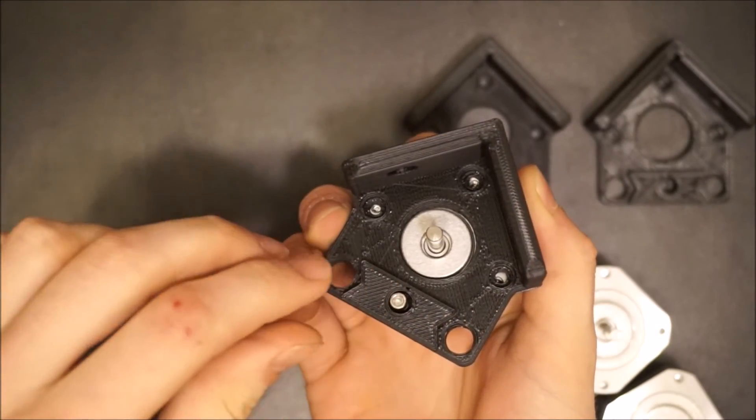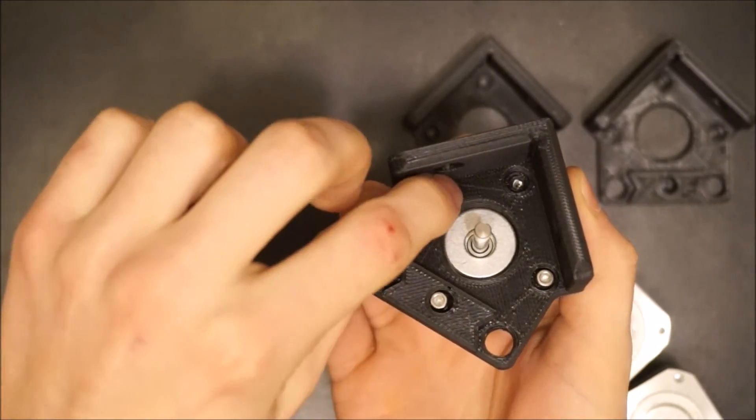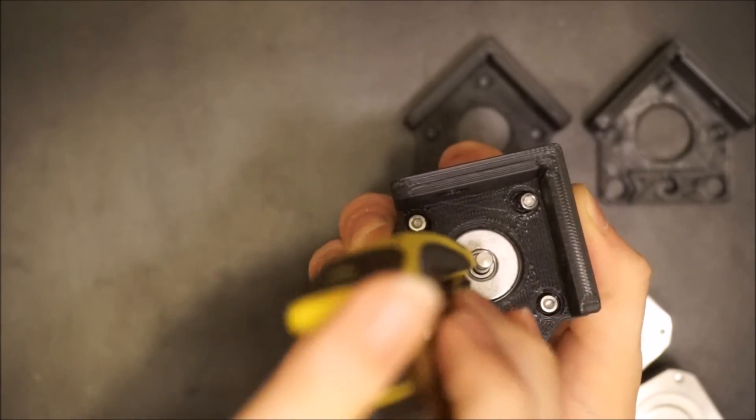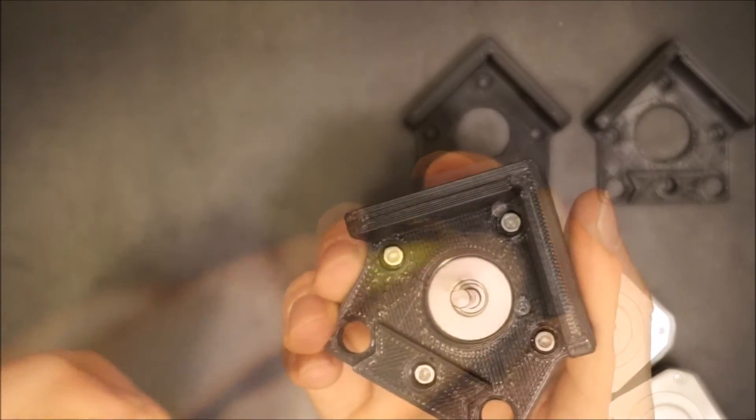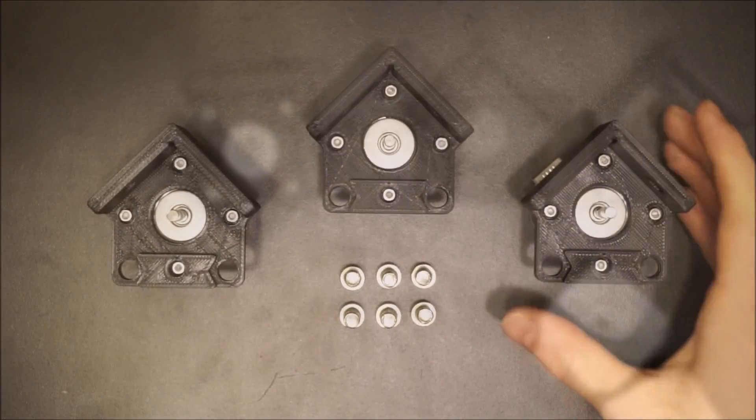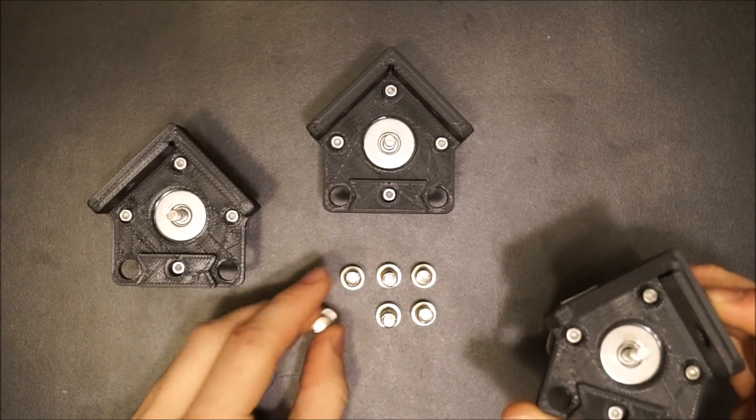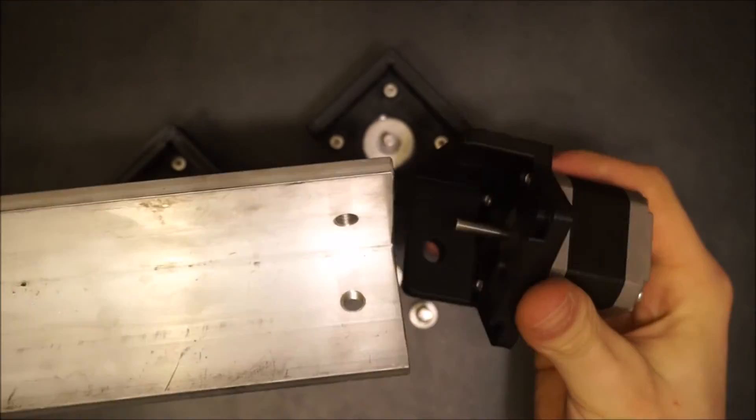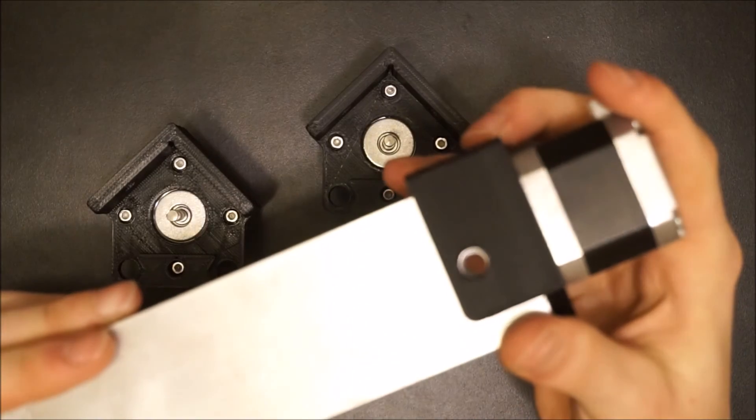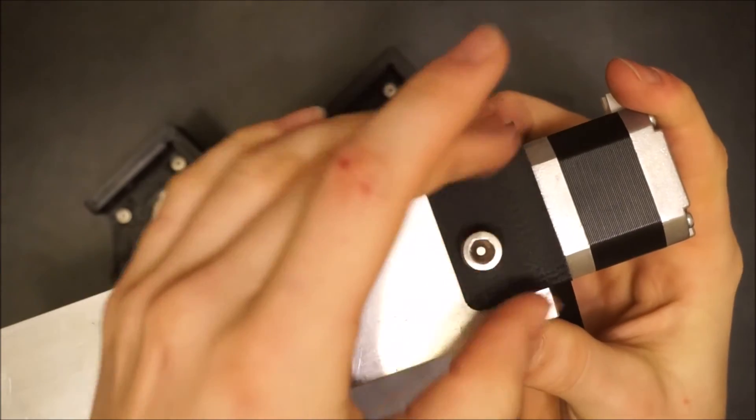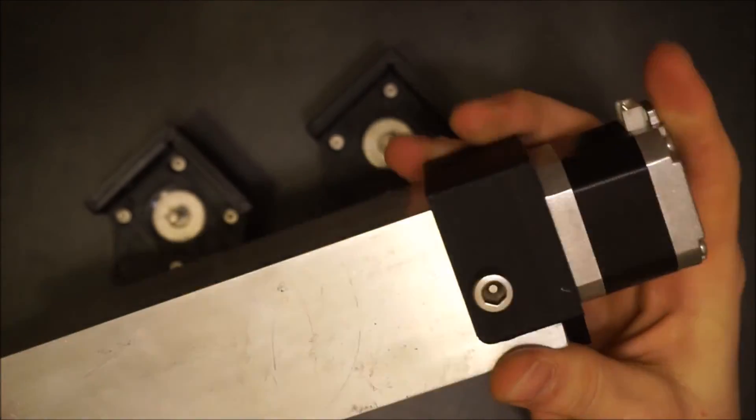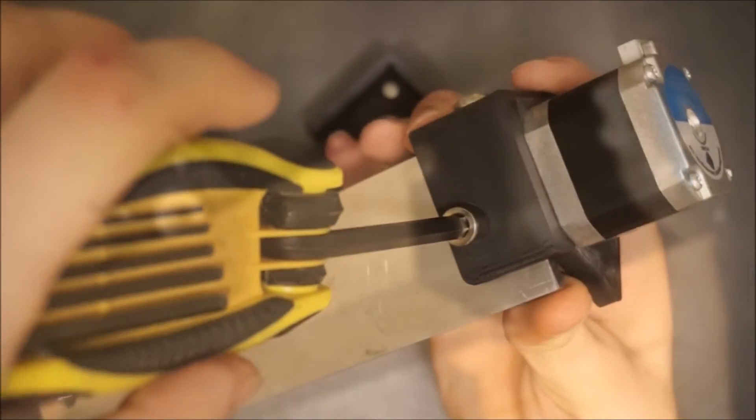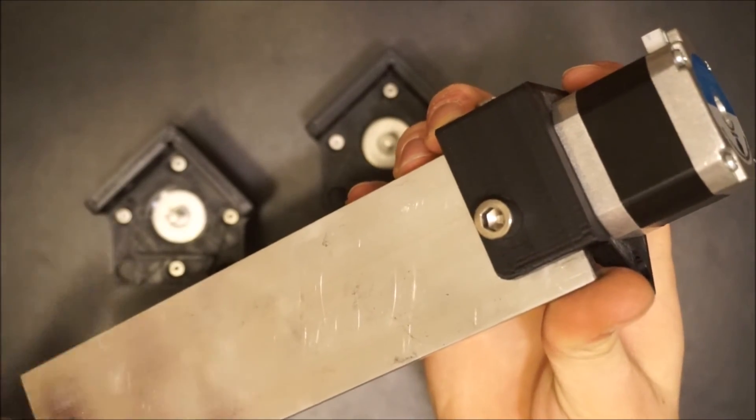Lastly, place an M3 bolt in each of the four holes and tighten them into place. After doing the same for the other two sets, you'll now connect the brackets to the aluminum rails using two short M8 bolts each, which you should find in the frame hardware bag. Grab the rail and the motor assembly. Line up the holes and attach them together using the two bolts. Repeat this for the other two sets with the other two rails.